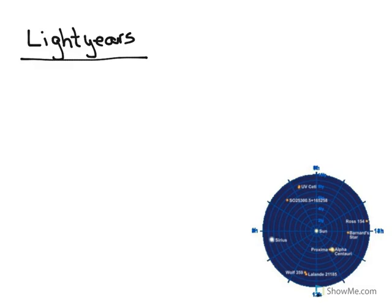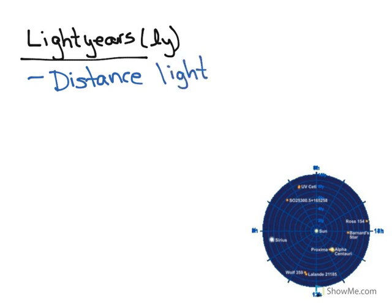One of the units of distance that you will hear used a lot in astronomy is the unit of a light year, which is often abbreviated LY. And our definition of a light year is the distance light travels in one year.